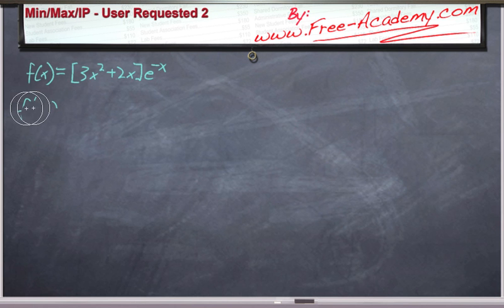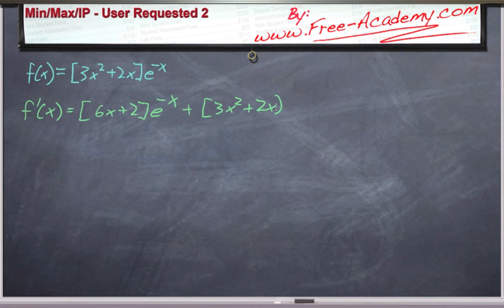All right, first derivative, f prime of x. This is going to be product rule, and then we'll need to use chain rule on our e to the negative x here. This will give us 6x plus 2, e to the negative x, plus 3x squared plus 2x. This will be minus e to the minus x, by using our chain rule.